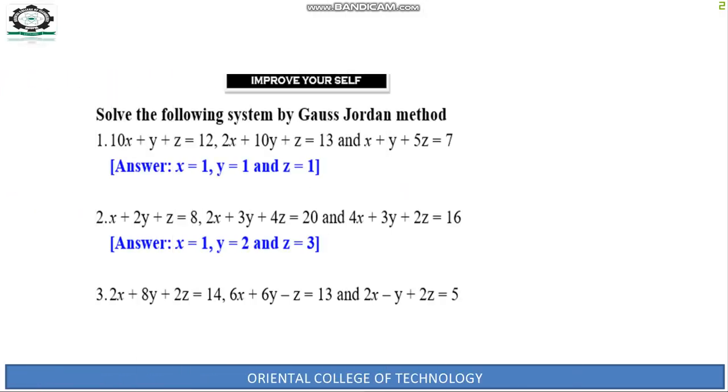Improve yourself: Solve the following system by Gauss-Jordan method: x + y + z = 12, 2x + 10y + z = 13, and x + y + 5z = 7.